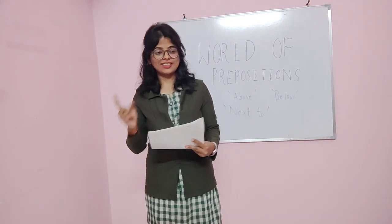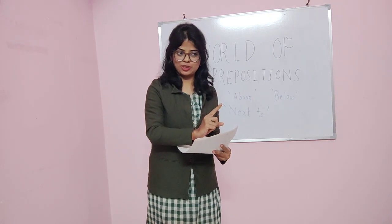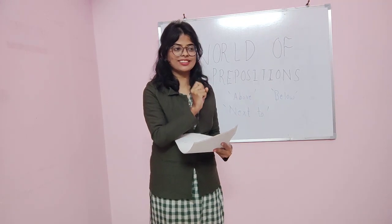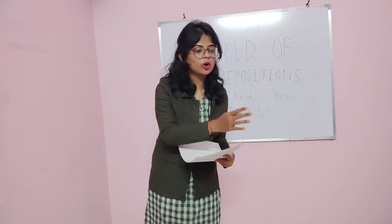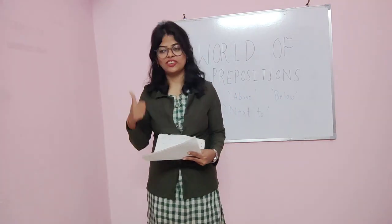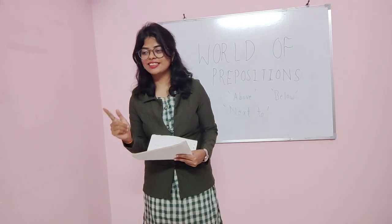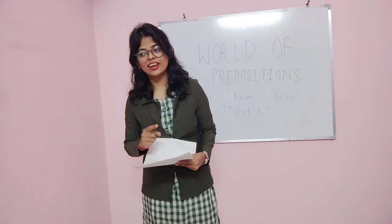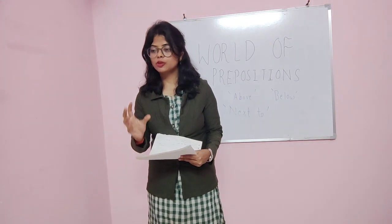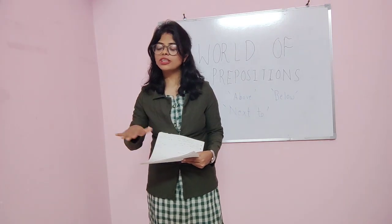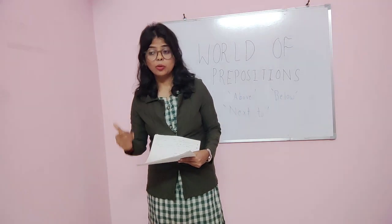Now let's see the first picture — you have 15 seconds to solve it. The first question is: the book is on the table. So group one, is it yes or no? Rishi and Rana, you both answered yes, and the answer is yes — the book is on the table, on the surface. Group two: Riya says no, and Sia says yes. Riya, the answer is yes — it is on the table. The book is on the table means it is on the flat surface. Hope it's clear now.